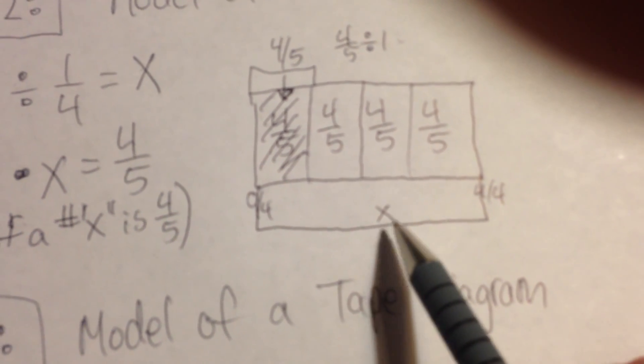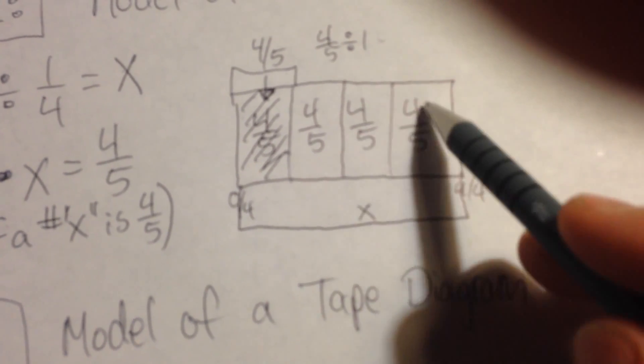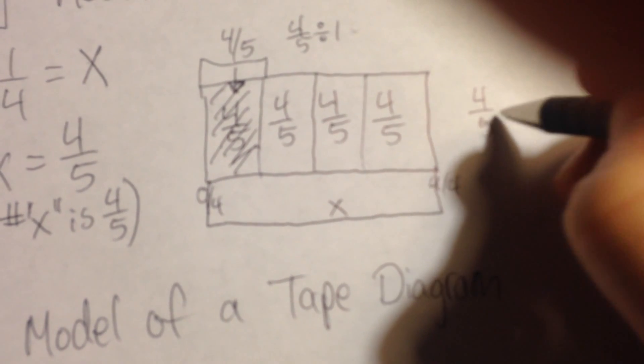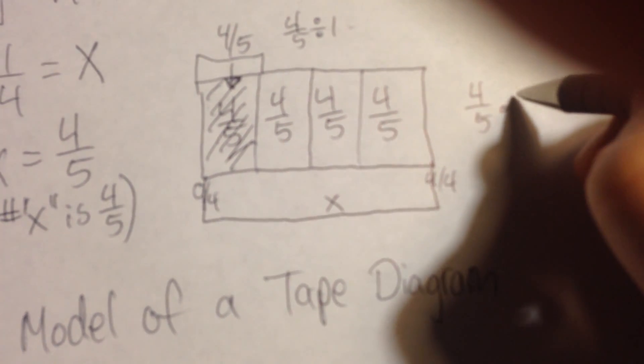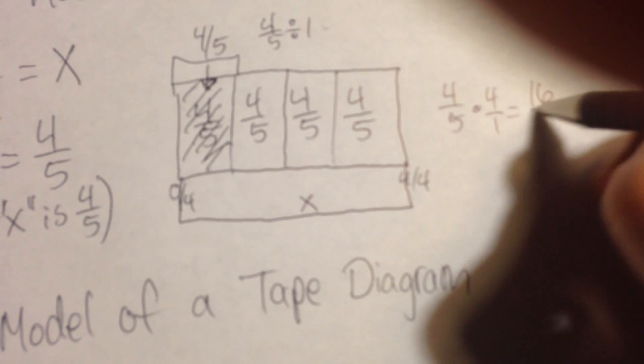When I combine them, it's going to give me my value of x. So I could add them, four-fifths plus four-fifths plus four-fifths plus four-fifths. I think it's simpler and quicker to use multiplication. So four-fifths times four over one is going to give me sixteen-fifths.